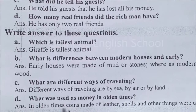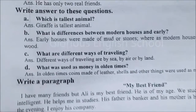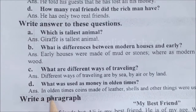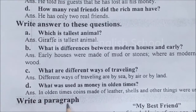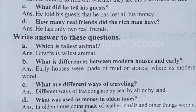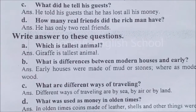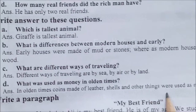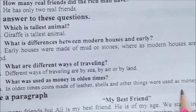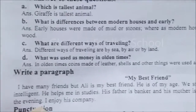Next question: what was used as money in the olden times? Puraane waqton mein paise ke taur par kya cheezein istamal hoti thi? In olden times, coins made of leather, shells, and other things were used as money.